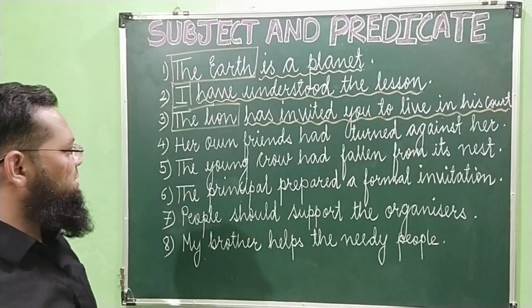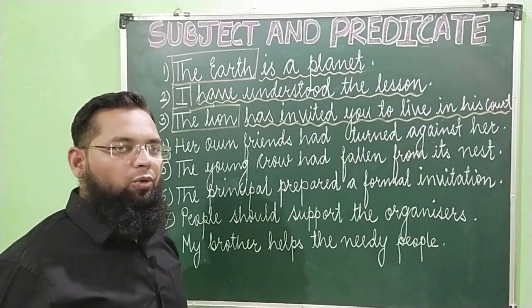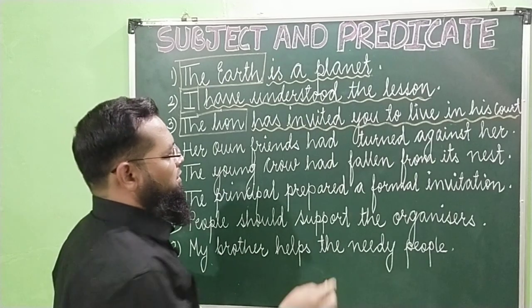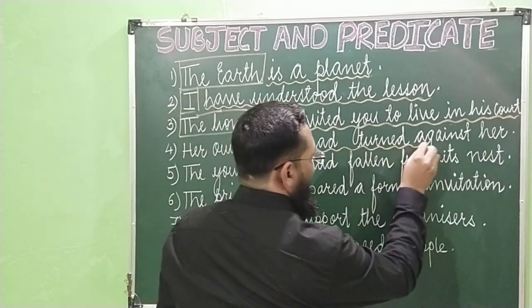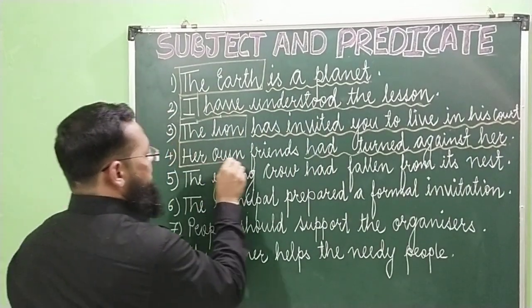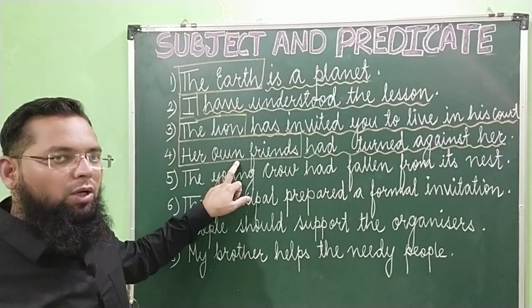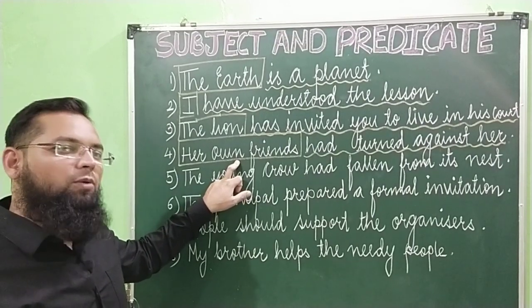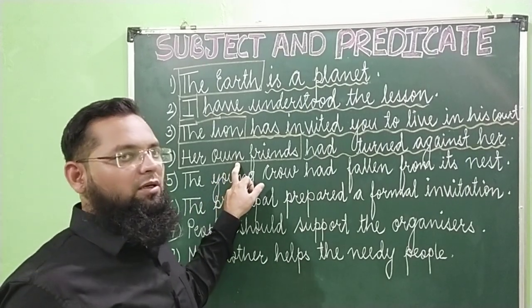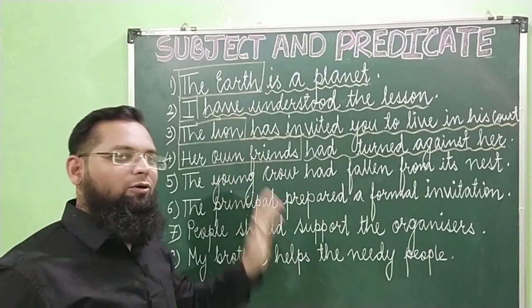Now have a look at the fourth sentence: 'Her own friends had turned against her.' The helping verb here is 'had,' so from 'had' to the end of the sentence will be the predicate. And 'her own friends' will be the subject. Is it a noun or pronoun? No, it is neither a noun nor a pronoun. Then what is it? The third possibility of a subject — a phrase. So 'her own friends' is a phrase, and a phrase can also be a subject.